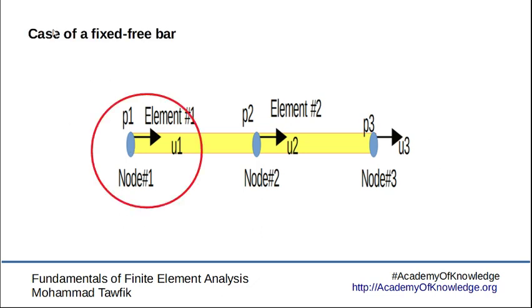For example, if I decided that I'm going to fix the bar from the left side, then u1, the value of u1, will become zero.